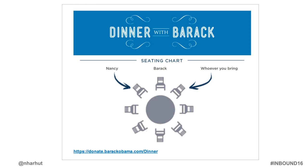When Barack Obama was trying to get re-elected, he sent an email asking for donations by midnight to be entered to win dinner with him. At the bottom was an image of the dinner table — a round table, not a long rectangular one. Only eight people. You'd be to his right, your guest to his left. You could see it, envision it, imagine it. It became very real, and it worked very well for him.